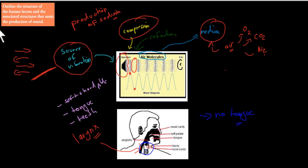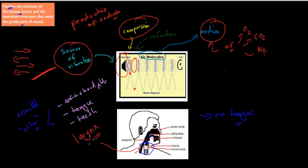The learning objective says we need to outline the structure of the human larynx and the associated structures that assist in the production of sound. The associated structures would be the soft and hard palate, the tongue, and the teeth. We're going to focus mainly on the larynx in terms of structure, because the dot point says 'outline' — not just 'identify' — which means we need to give more detail than just saying that the larynx is important for sound production.